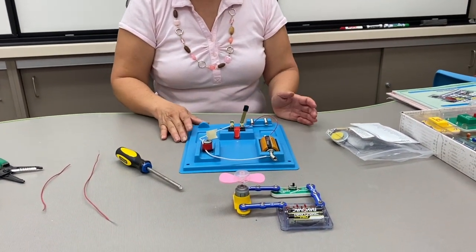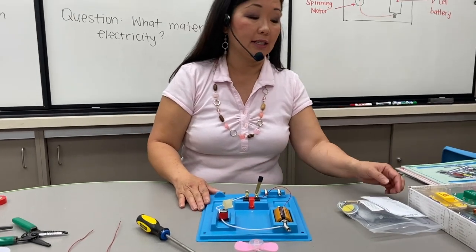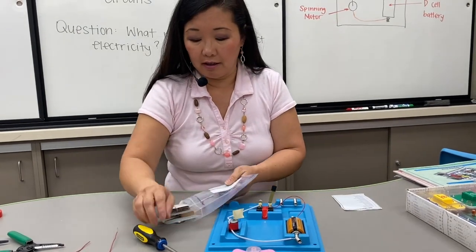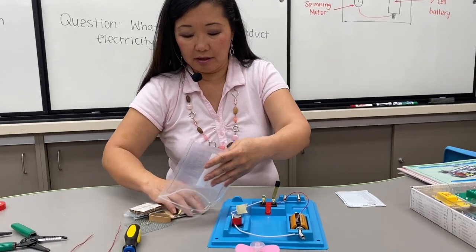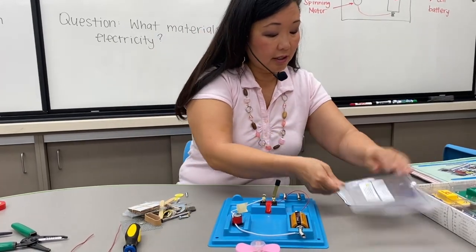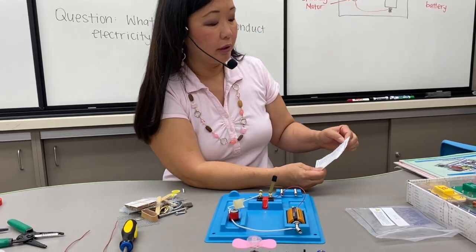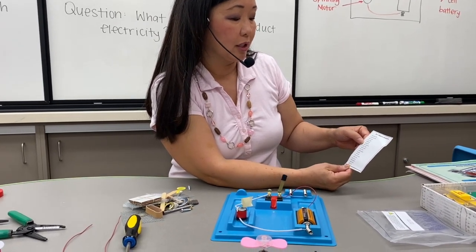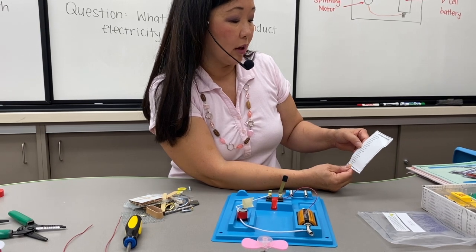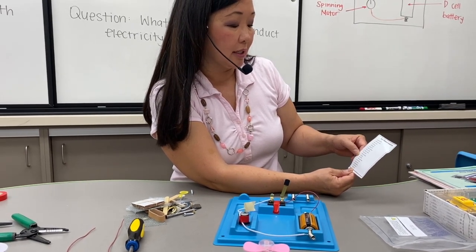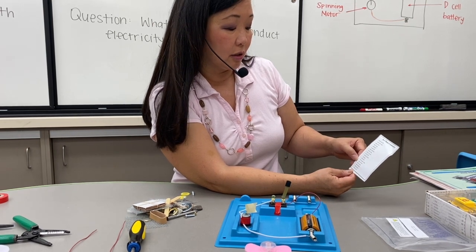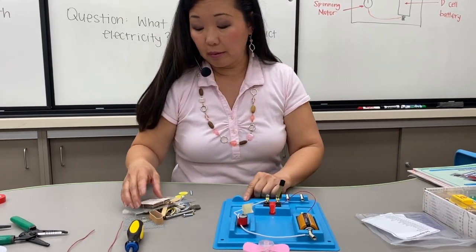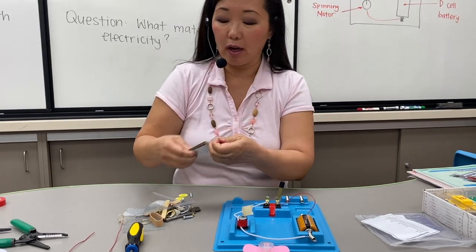What we're going to figure out is what conducts electricity and what doesn't. I have a bag of test items. It comes with aluminum foil, aluminum nails, black rocks, brass rings, cardboard, copper foil, paper fasteners, plastic chips, plastic straws, river rocks, rubber bands, sponges, steel nails, steel paper clips, steel screens, steel screws, steel washers, wood sticks, and wool yarn. We'll be able to figure out what conducts electricity and what doesn't.